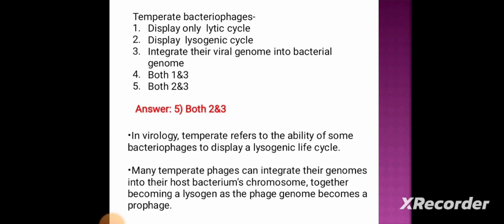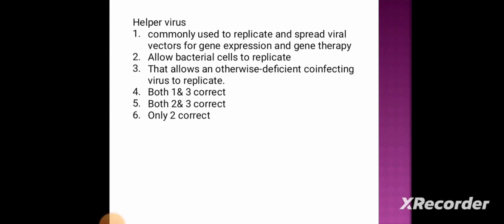Next question: a helper virus — option 1: is commonly used to replicate and spread viral vectors for gene expression and gene therapy, option 2: allows bacterial cells to replicate, option 3: allows an otherwise deficient co-infecting virus to replicate, option 4: both 1 and 3, option 5: both 2 and 3. The correct answer is option 4, both 1 and 3. Helper virus is commonly used to replicate and spread viral vectors for gene expression and gene therapy, and it allows an otherwise deficient co-infecting virus to replicate.